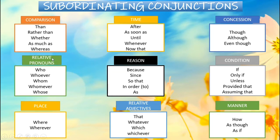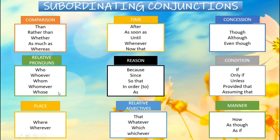Next are subordinating conjunctions describing relative pronouns: WHO, WHOEVER, WHOM, WHOMEVER, or WHOSE. Those describing reason include BECAUSE, SINCE, SO THAT, IN ORDER TO, AS. Those describing condition include IF, ONLY IF, UNLESS, PROVIDED THAT, ASSUMING THAT. Some indicate place such as WHERE and WHEREVER. Some describe relative adjectives: THAT, WHATEVER, WHICH, WHICHEVER. Lastly, some describe manner such as HOW, AS THOUGH, and AS IF.